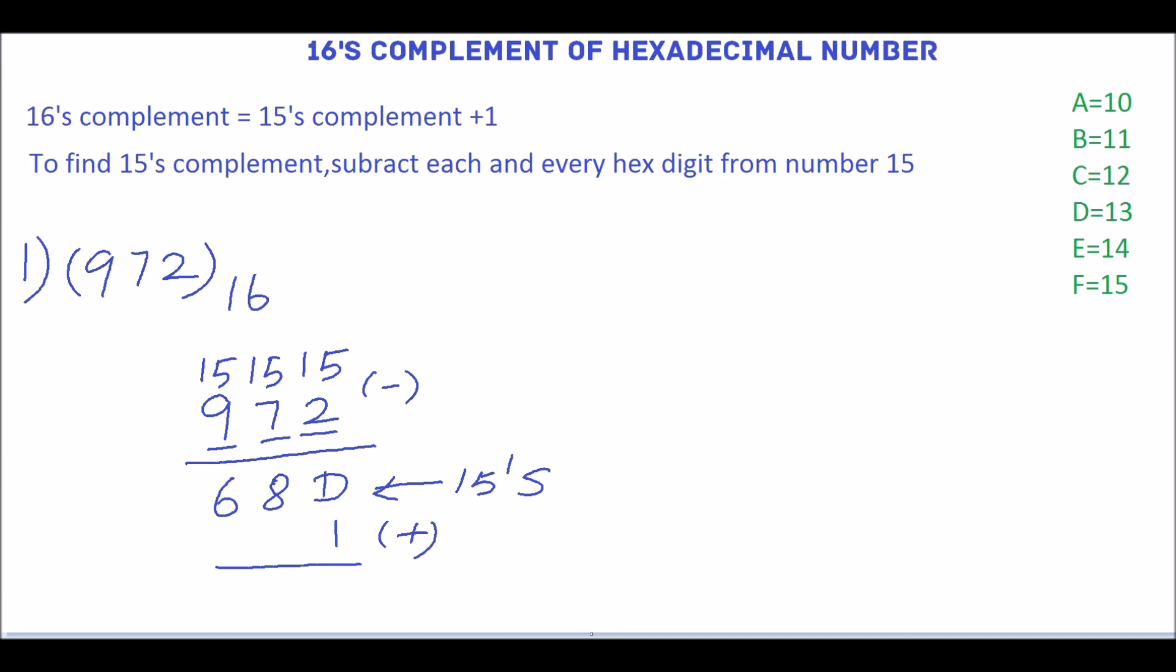14 is equivalent to E. Then 8, 6. So 6, 8, E is the 16's complement of the hexadecimal number 972.